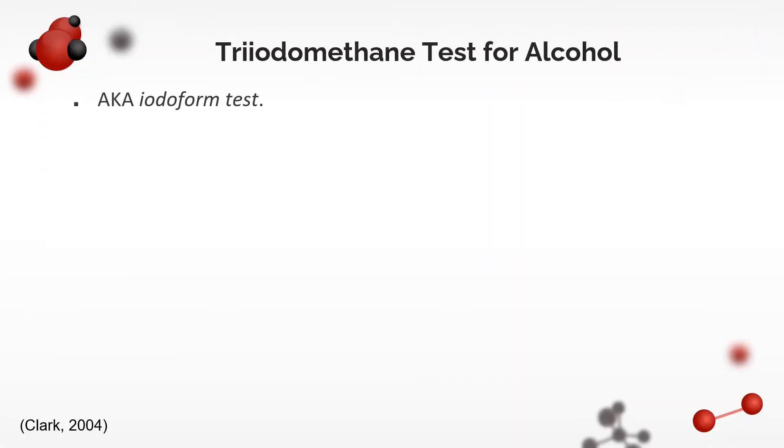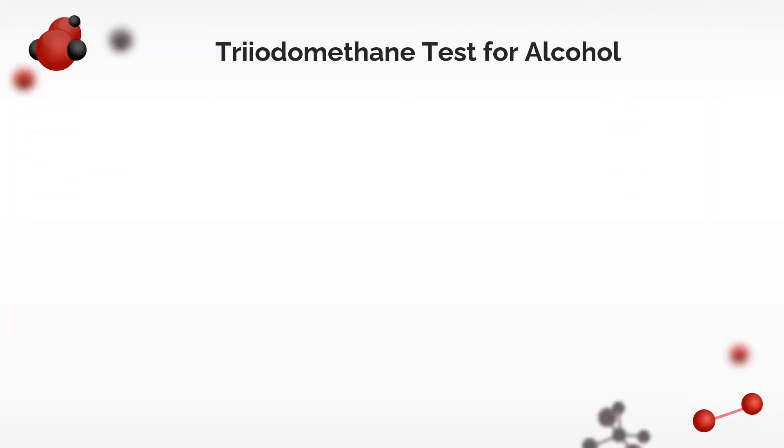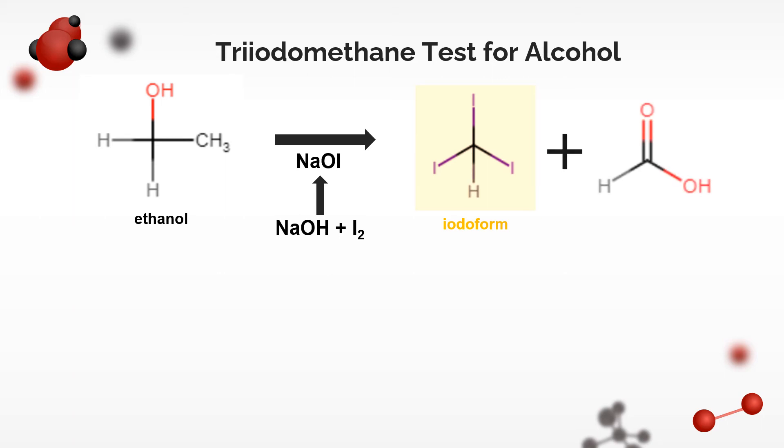In the experiment, the triiiodomethane or iodoform test for alcohol was conducted to confirm the presence of alcohol in the anaerobic setup. This is a test for a specific type of alcohol called secondary methyl alcohol. And indeed, ethanol fits the bill. The test involves reacting ethanol with sodium hypoiodate, NaOI. This comes from the reaction between sodium hydroxide and iodine. The product is iodoform, and this causes the solution to change from brownish, the color of iodine, to orange or yellowish, the color of iodoform. The other product is metanoic acid.